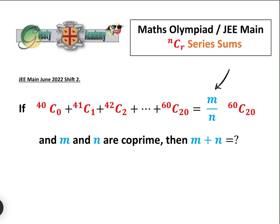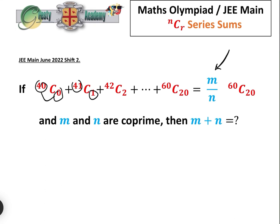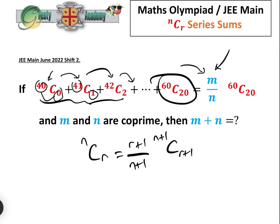The most interesting thing about this question is that the difference between this one and this one is always 40. So we're going to convert this one to that one, then combine this one to that one, and so on until we get the whole lot converted into 60C20. What we're going to use to do that is NCR equals R plus 1 over N plus 1 times N plus 1C R plus 1.